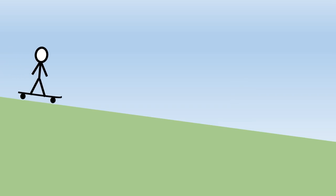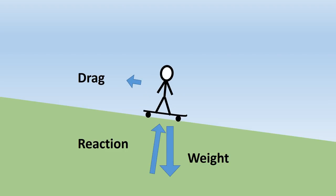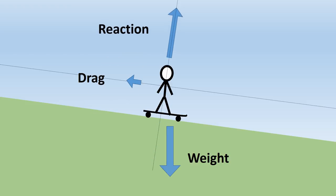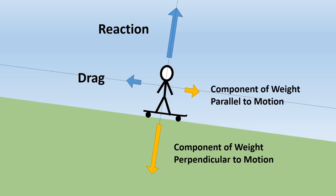Now imagine a skateboarder on a slope. As before, the weight is acting vertically down, the drag is acting in the opposite direction to motion, and the reaction force is perpendicular to the surface. If we resolve these forces parallel and perpendicular to the direction of motion, we can see that part of the weight is pulling the skateboarder downhill and overcoming the drag.